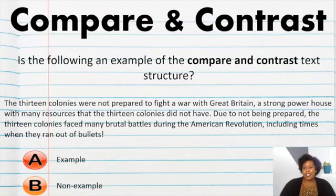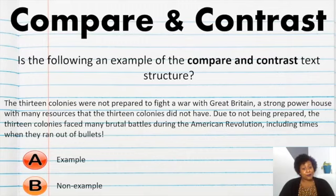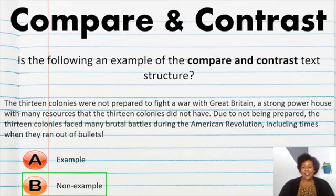Let's look at another text structure of compare and contrast. The 13 colonies were not prepared to fight a war with Great Britain, a strong powerhouse with many resources that the 13 colonies did not have. Due to not being prepared, the 13 colonies faced many brutal battles during the American Revolution, including times when they ran out of bullets. Was that a compare and contrast text structure? If you said that was a non-example, you're correct. You're getting better at this already.